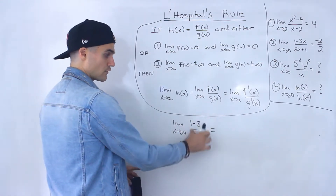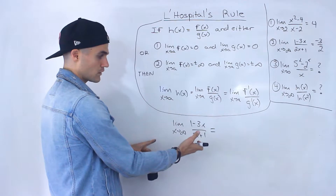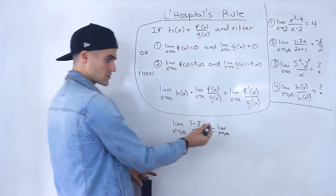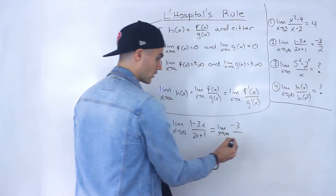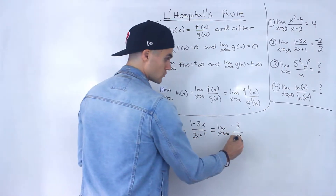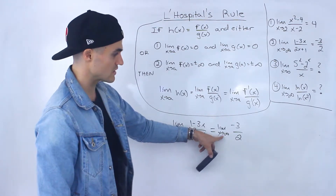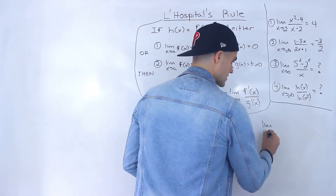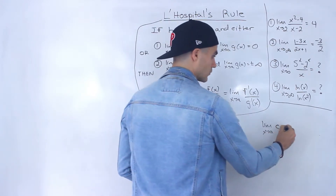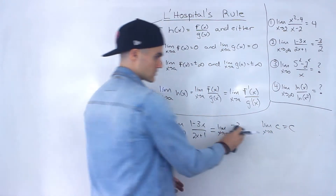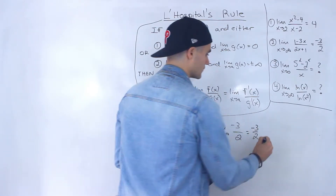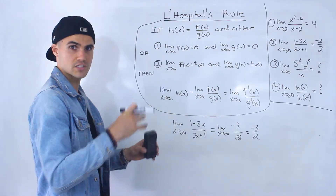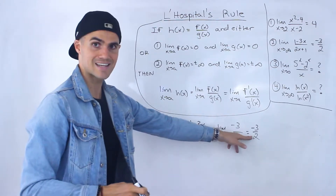We used a different tool before, but what if we use L'Hôpital's Rule? Well, it's negative infinity over positive infinity — it's in that indeterminate form. So let's take the derivative of the numerator: the derivative of 1 - 3x is just -3. And the derivative of 2x + 1 is just 2. Now we have the limit as x approaches infinity of a constant, which by properties of limits just equals that constant. So the answer is -3/2, the same result as with the other method.